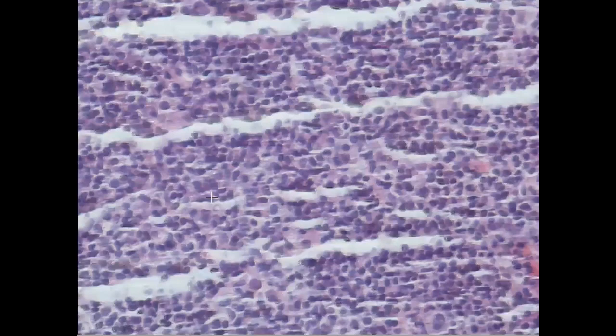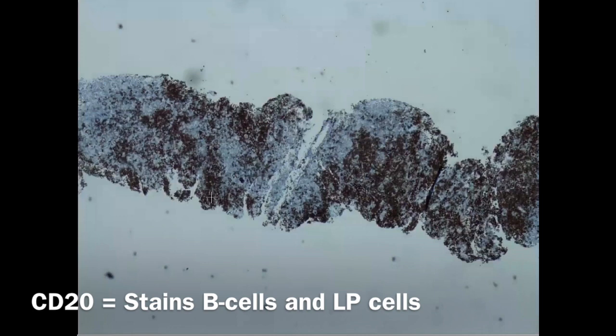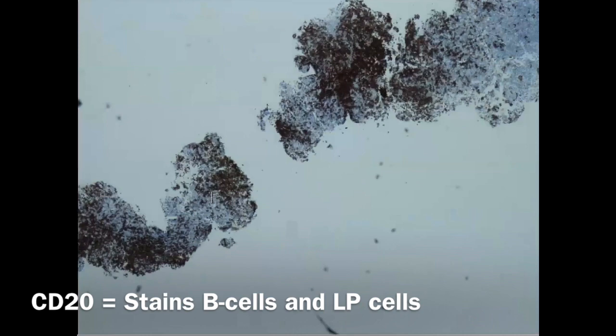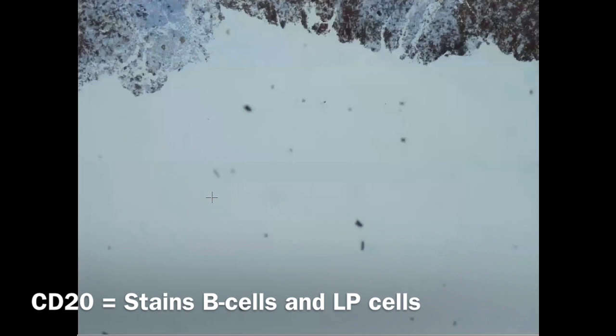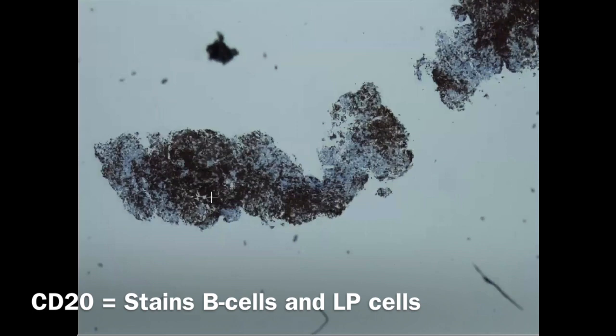For the stains I will go to lower magnification — here at 4x. As you can see all B cells are taking the stain, but the question is whether these large cells are taking the stain or not. If they don't take the stain, this will be diagnosed as classic type. If they are taking the stain, then this is the nodular lymphocyte predominant type, because the B cell antigens are preserved in this type.